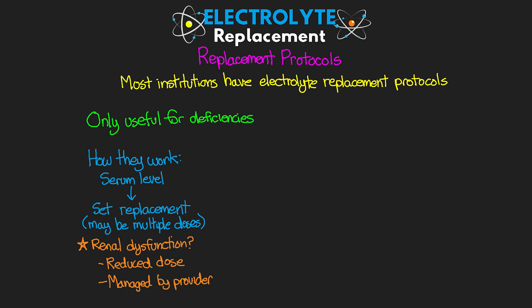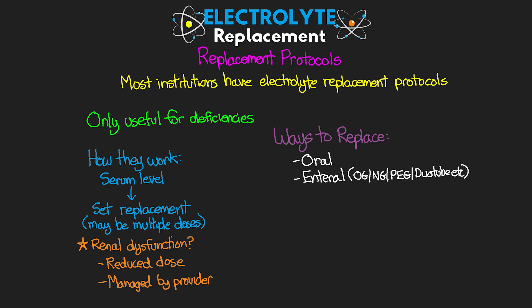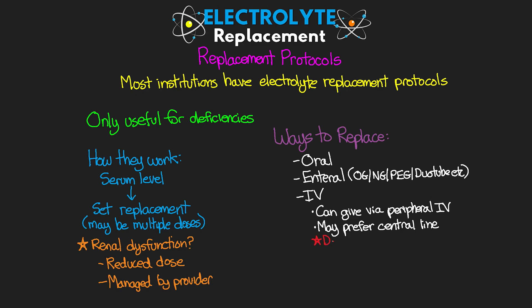When replacing these electrolytes, there are three different ways we can do this: orally, via an enteral tube (such as an OG, NG, PEG, or duotube), or IV. We can give all of these electrolytes via a peripheral IV, but there are a couple that are preferable to give via a central line. It is also important that we do not free-hang these electrolytes — we really need to run them through an infusion pump to prevent serious complications if they get in too fast. Whenever possible, we want to give replacement either orally or enterally, though patients with significant deficiencies will need replacement quicker than we can achieve with the gut.